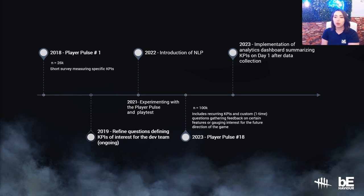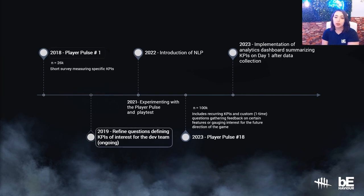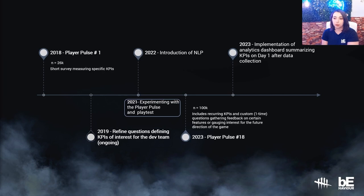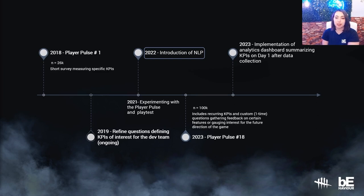Here's an overview of our Player Pulse evolution throughout the years. We started this initiative when Behaviour Interactive built a data team in 2018, approximately two years after the launch of the game. The survey was initially brief, mainly about overall satisfaction. Around 2019 we added more questions about game design, social media engagement, and potential features. Around 2020 and 2021 we started using more mixed methods and worked closely with the playtest analysts. In 2022, we introduced NLP — Natural Language Processing — which made a huge impact on how we analyze the Player Pulse.